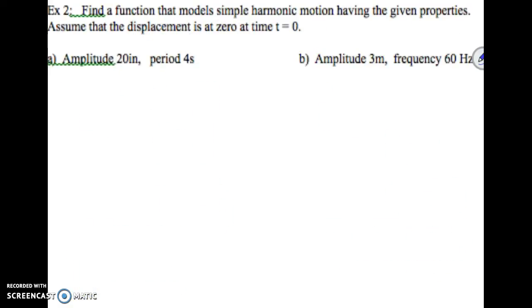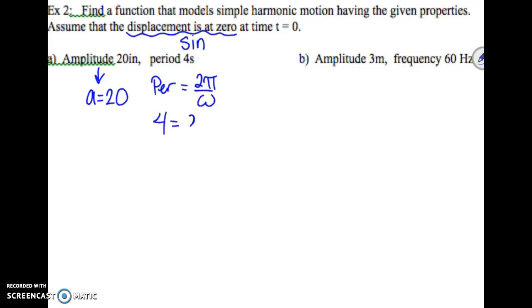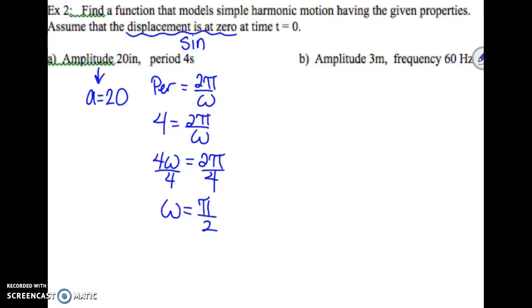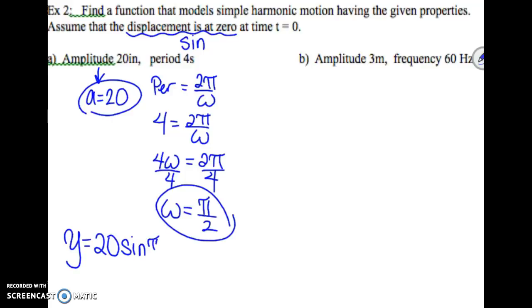Example two: find a function that models simple harmonic motion. Assume that the displacement is at zero — that tells us we're going to use sine. Our amplitude is 20, so a equals 20. Our period is 4 seconds. Period equals 2 pi over omega, so 4 equals 2 pi over omega. Cross-multiplying: 4 omega equals 2 pi, so omega equals pi over 2. Our equation is y equals 20 times sine of pi over 2 times t.